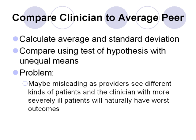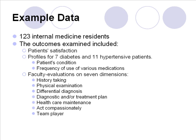Let's start with comparing clinicians to the average of the peer. This is the most common method. You calculate the peer providers' and the clinician's average and standard deviation, then compare these data using a test of hypothesis with unequal means. The key problem is that this kind of analysis may be misleading, as providers see different kinds of patients, and clinicians with more severely ill patients will naturally have worse outcomes.